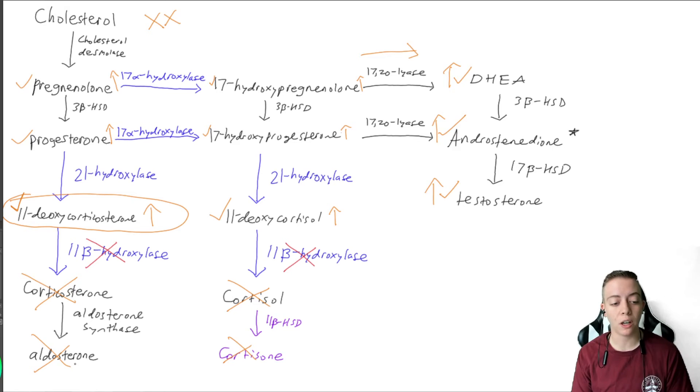Because as we know, we don't have aldosterone production, but 11-deoxycorticosterone does function as a mineralocorticoid. So even though we don't specifically have aldosterone, the body essentially thinks it does. We think we still have aldosterone. So we are going to function as if we have a high amount of aldosterone. And this is where the difference is going to happen with this presentation, as opposed to 21-hydroxylase deficiency.